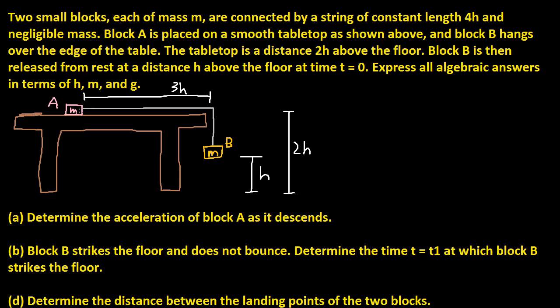Block A is placed on a smooth tabletop and block B hangs over the edge of the table. The tabletop is a distance 2h above the floor, and block B is released from rest at a distance h above the floor at time t equals 0. Express all algebraic answers in terms of h, m, and g. This means you want to write the answer out in an algebraic form using these variables.